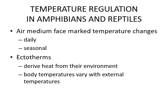Temperature regulation in amphibians and reptiles: amphibians live in both aquatic and terrestrial environments, while most reptiles live in terrestrial environments. Amphibians are intermediate — sometimes in aquatic, sometimes in terrestrial environments. Air medium shows marked temperature variations on a daily basis: early morning temperatures are low, mid-day is high, and night is low again. Seasonally, summer has high temperatures and winter has low temperatures. Amphibians and reptiles are ectotherms — they depend upon environmental temperature, derive heat from their environment, and body temperature varies with external temperature.